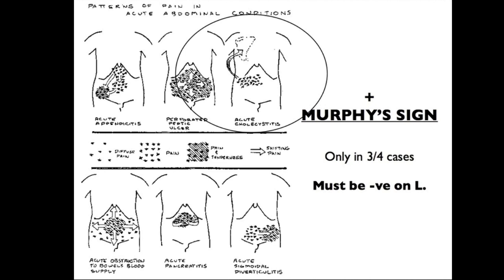Murphy's sign: you palpate the gallbladder in the midclavicular line at the costal margin and ask the patient to inspire. The gallbladder presses on your fingers, causing increased pain and cessation of inspiration. Remember it must be negative on the left, to exclude generalised peritonitis or other GI problems. It's only positive in about 75% of acute cholecystitis cases, so it's not diagnostic but useful if positive.